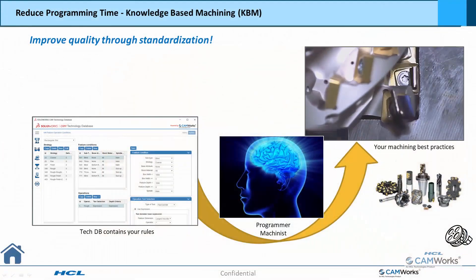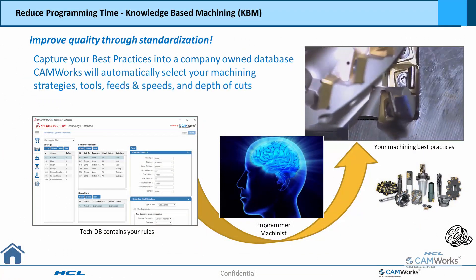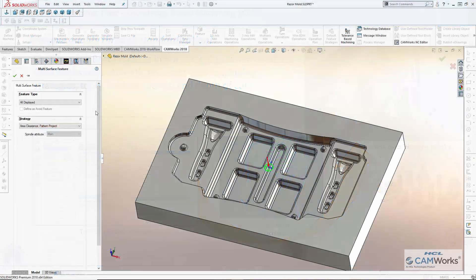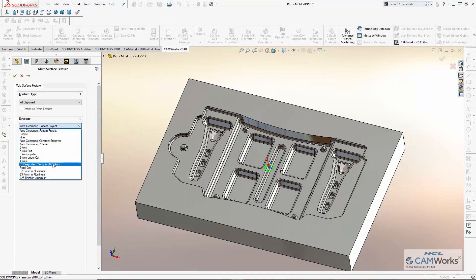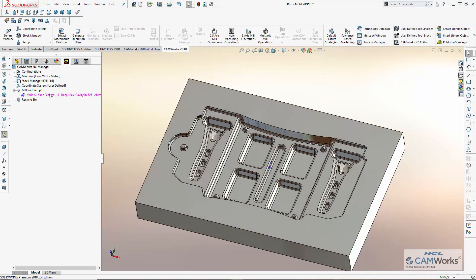CAMWorks Knowledge Base Machining is fully customizable so you can capture your own best practices, and CAMWorks will automatically generate all of the operations with the tools, feeds, speeds, and depth of cuts. I'll select the machining strategy I've already stored for machining mold cavities, using CAMWorks Volume Mill to generate ultra-high speed toolpaths for the roughing.